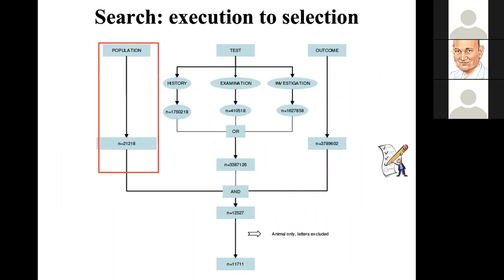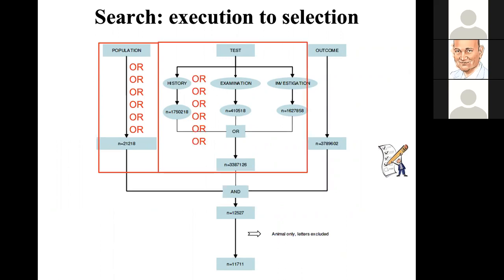Figure 1 looks something like this. Here you have the terms for population combined with OR - in this particular review that number exceeds 21,000 citations. The terms for tests - combined with OR for history, examination, and other investigations all together - you can see a very large number there as well.